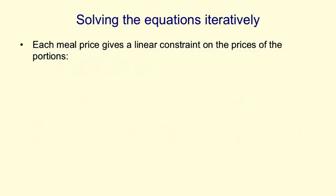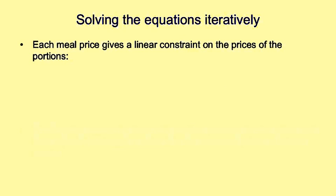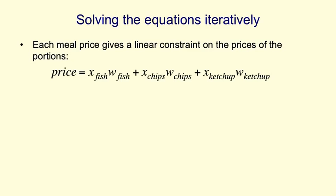Each meal you get a price, and that gives you a linear constraint on the prices of the individual portions. The price of the whole meal is the number of portions of fish, x_fish, times the cost of a portion of fish, w_fish, and the same for chips and ketchup.